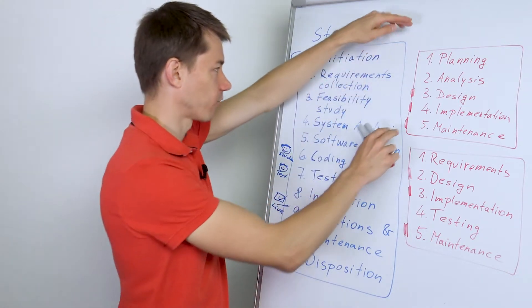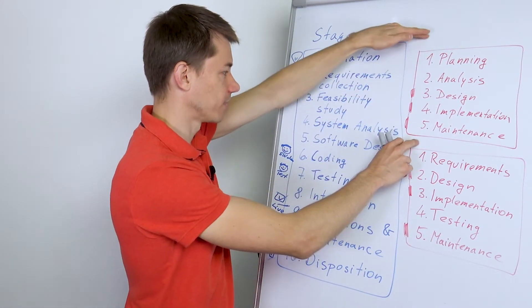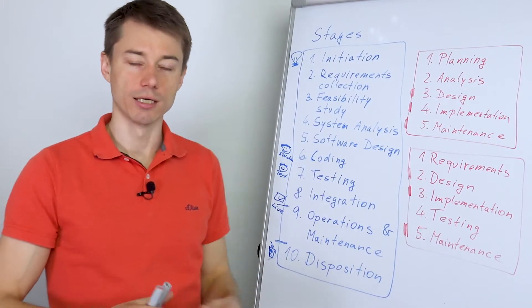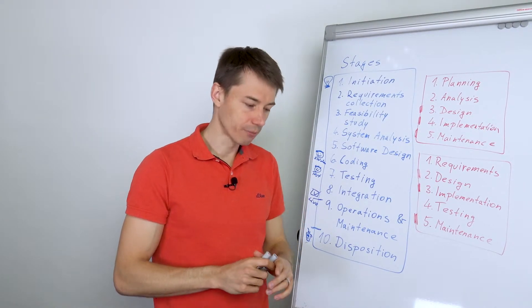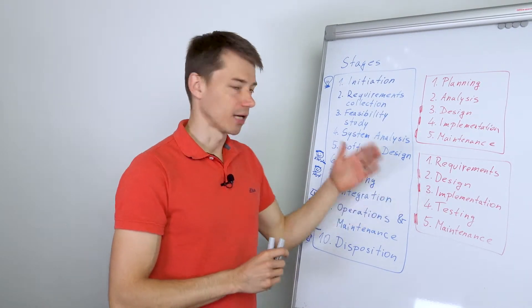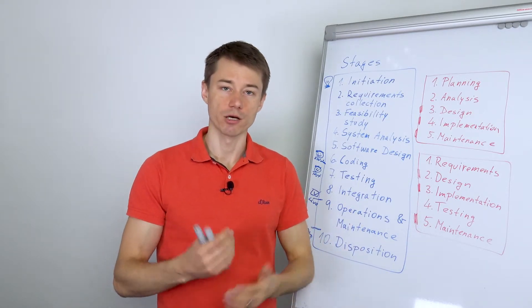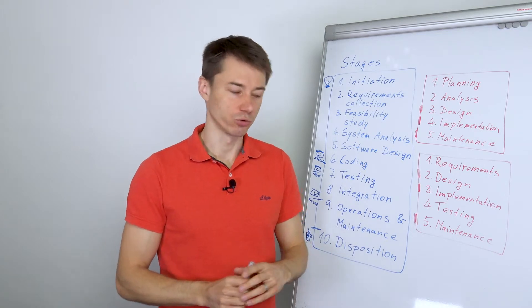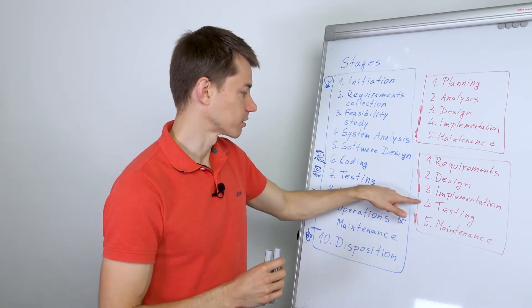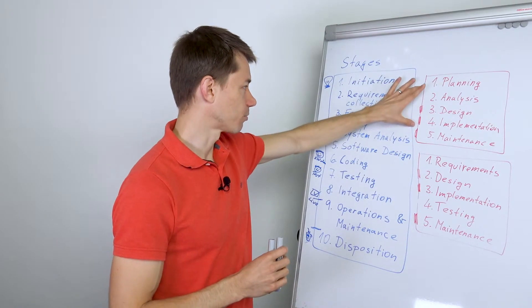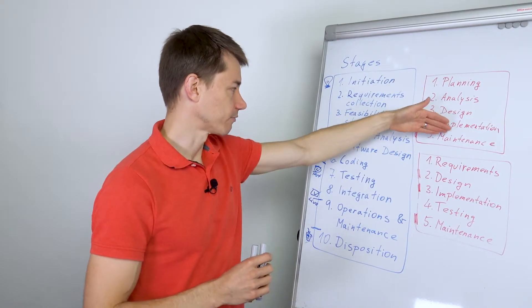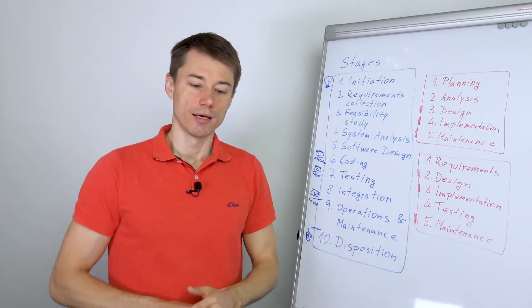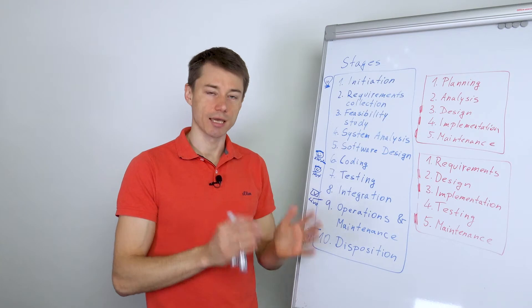So in a company for one project you can have these five phases, for another project you can have these five. When you, for example, involve a third party. This is something I've seen just recently in a company that integrated a payment gateway, they required, I mean, the payment gateway required the company to test it properly, so obviously testing phase. But for some other internal projects, there's no testing phase needed because the developer who codes the system, he also tests it at the same time.